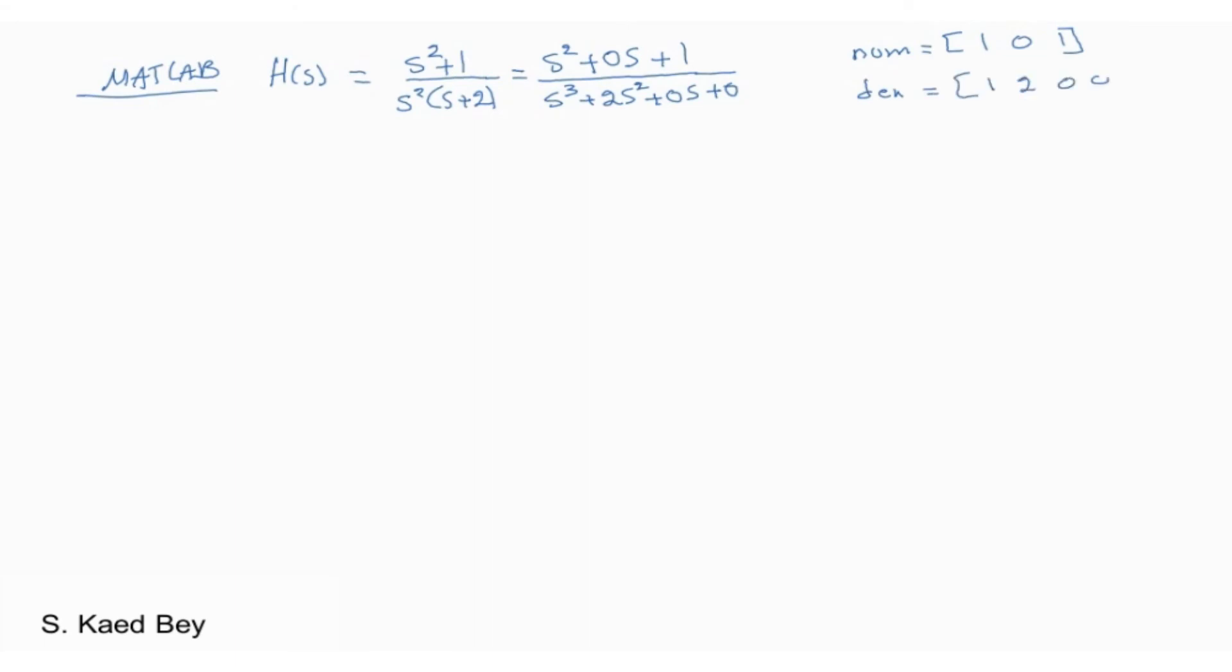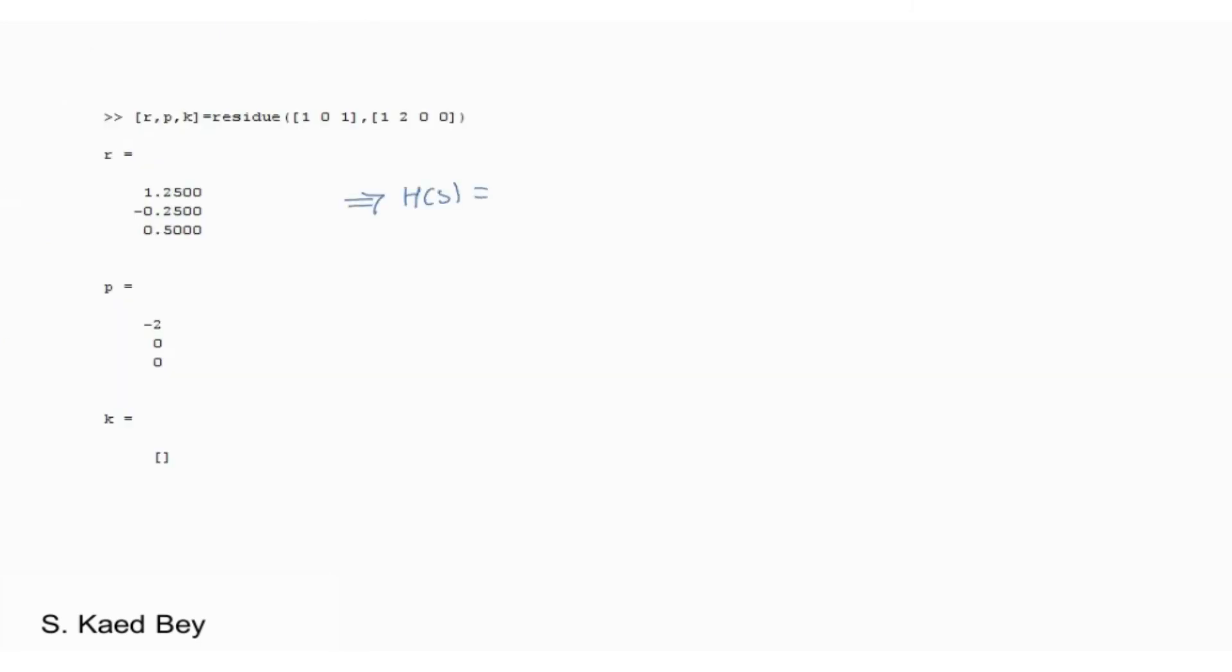Using the residue function in MATLAB, we will find that you get a vector for the residue, which is R, a vector for the poles, which is B, and the direct terms expressed in vector K. Please note that the first value in the R vector corresponds to the first value in the pole vector.